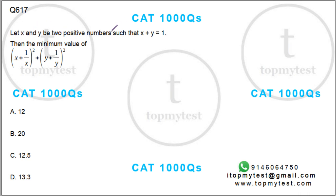Let's see what this is. Let x and y be two positive numbers such that x plus y is equal to 1. What is the minimum value of this?